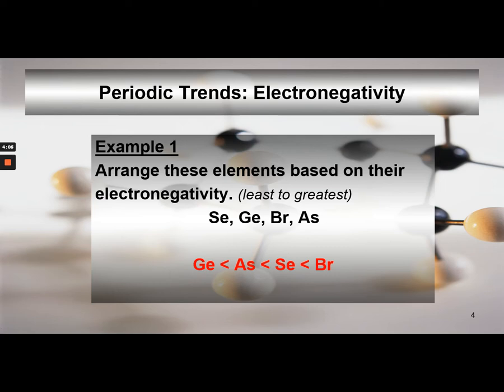If you said germanium has the smaller electronegativity, you are correct, and bromine has a higher electronegativity. Therefore, when germanium forms bonds it will tend to be nonpolar, and when bromine forms bonds it will be polar.